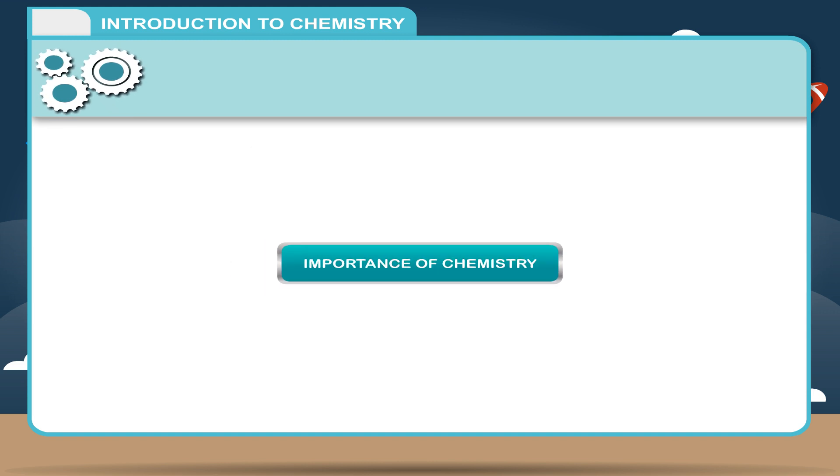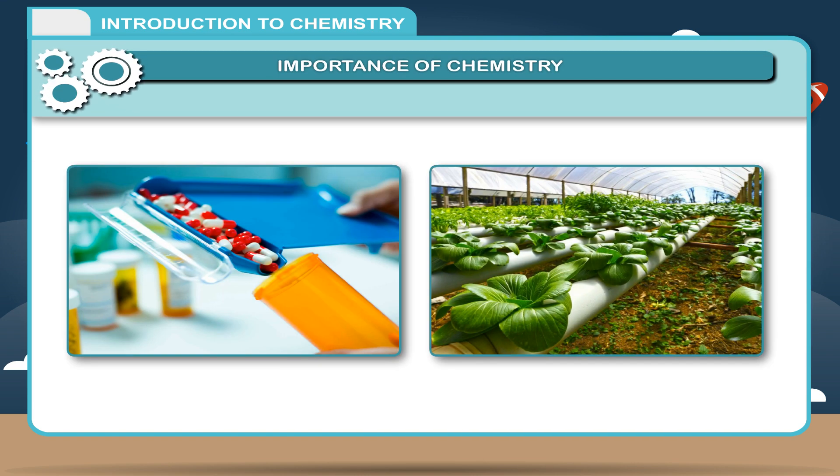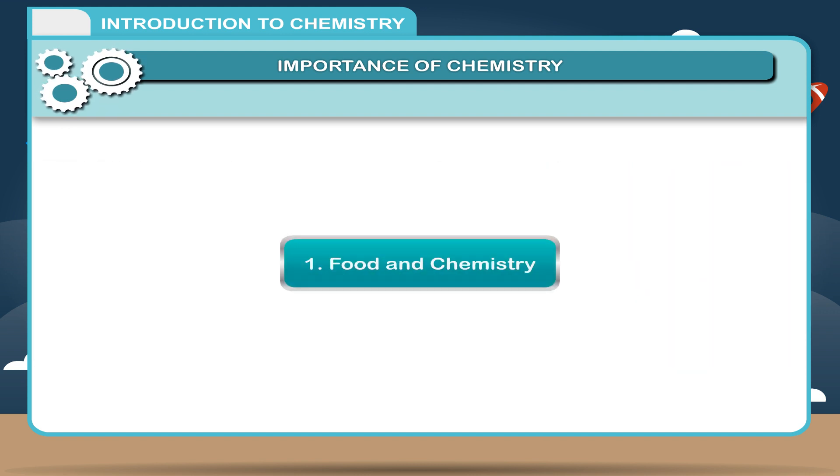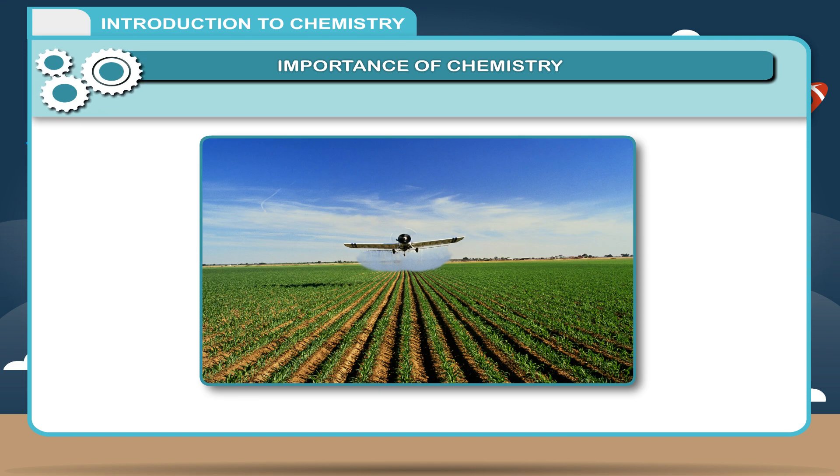Importance of Chemistry. Chemistry plays an important role in everyday life and helps to fulfill man's basic needs. Some major fields in which chemistry has contributed are: 1. Food and Chemistry. Good yield of crops is possible only due to back-breaking labor of farmers who use fertilizers that are chemicals. Also, timely spraying of insecticides and pesticides saves the crop.